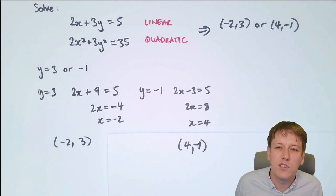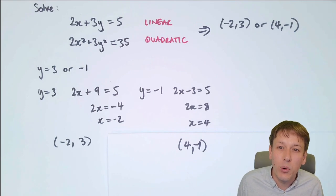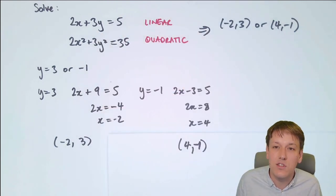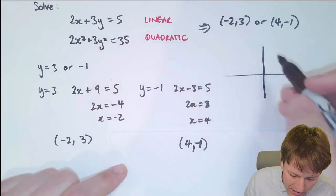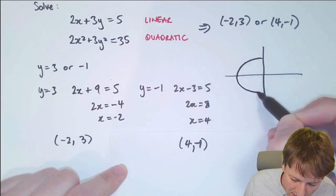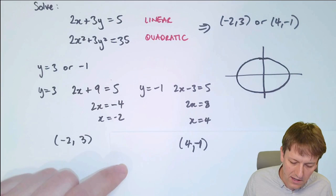One way of interpreting the solutions to these simultaneous equations is to say they are the coordinates of the points where the graphs of these equations intersect. If you were to draw the graphs of these, the quadratic one, 2x squared plus 3y squared equals 35, would be an ellipse. And 2x plus 3y equals 5 would be a straight line.